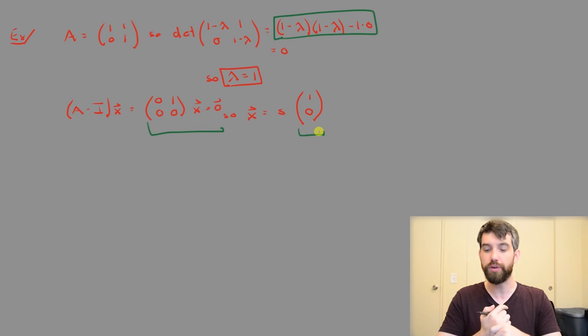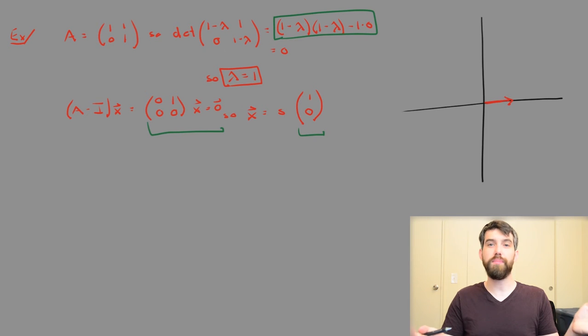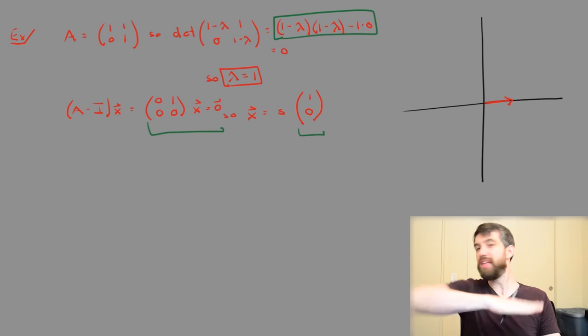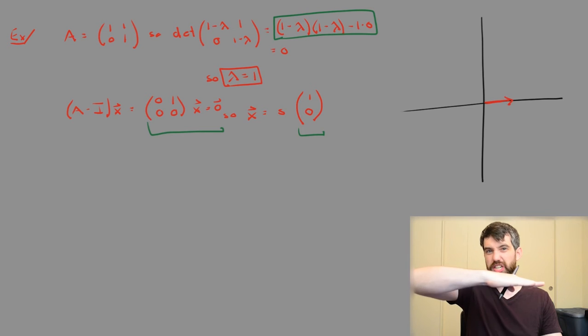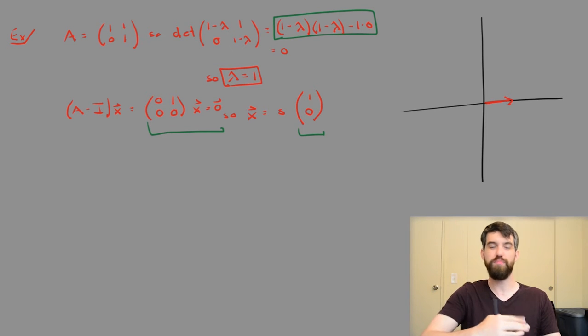So this is going to be interesting. There isn't much to draw here, we're just going to take the vector. Because it's a lambda equal to 1, it stretches not at all. And so in fact, any vector which is lying on the x-axis is just going to stay exactly where it is. Not moving at all is the same idea of just multiplying a factor of 1.